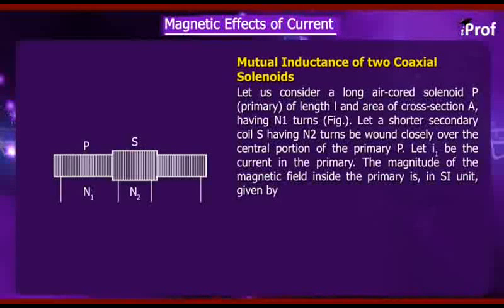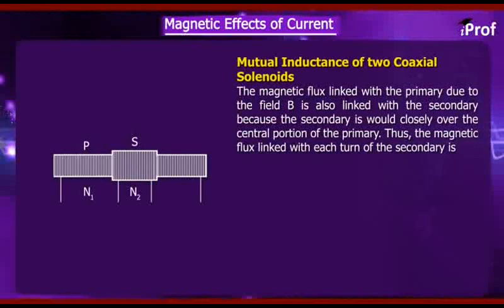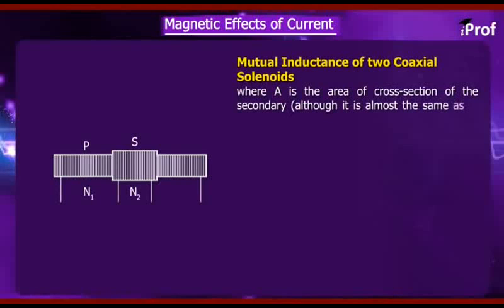Let I1 be the current in the primary. The magnitude of the magnetic field inside the primary is given in SI units by B = μ₀ (N1/L) I1. The magnetic flux linked with the primary due to field P is also linked with the secondary because the secondary is wound closely over the central portion of the primary. Thus, the magnetic flux linked with each turn of the secondary is φ₂ = BA = μ₀ (N1/L) I1 · A, where A is the area of cross-section of the secondary.